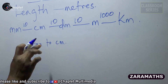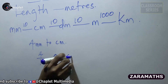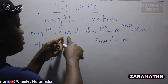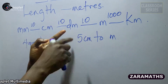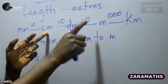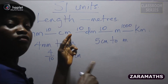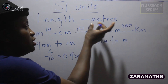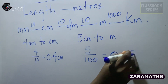In this case, 4 millimeters to centimeters will be 4 divided by 10, which is 0.4 centimeters. Another example: you want to convert 5 centimeters to meters. You have the centimeter here and the meters here. 10 centimeters gives one decimeter, and 10 decimeters gives one meter, so 100 centimeters gives one meter. Therefore, to convert, you divide 5 by 100 — 5 over 100 — to give us 0.05 meters.